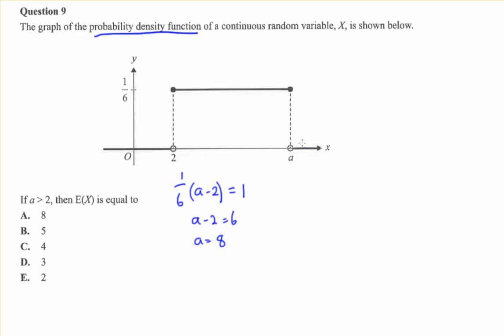If you set up the integral you'll find the exact same thing. Now we need to find the expectation. And the formula to do that is given like this. We're going to integrate over this interval from 2 to 8 and it's x times f of x. f of x in this case is just 1 sixth.